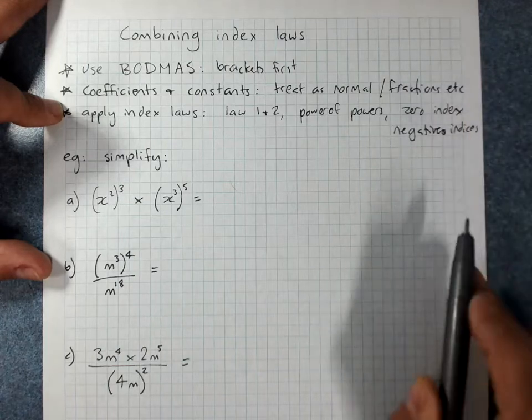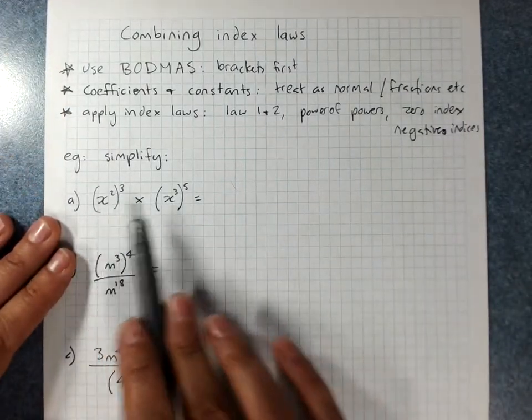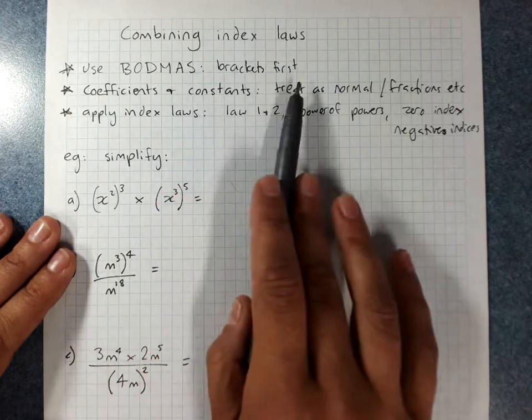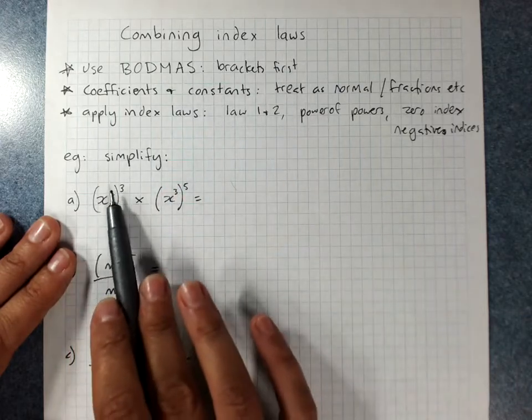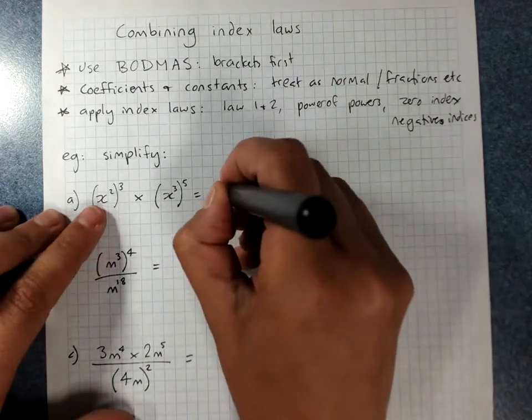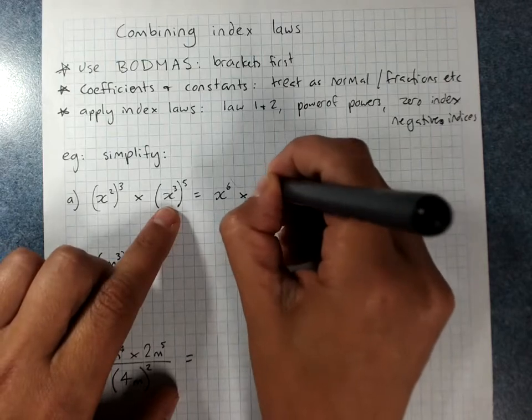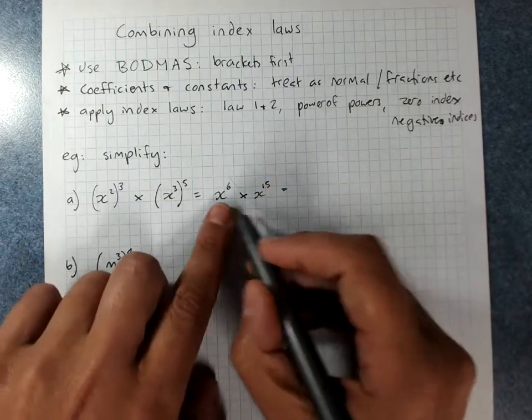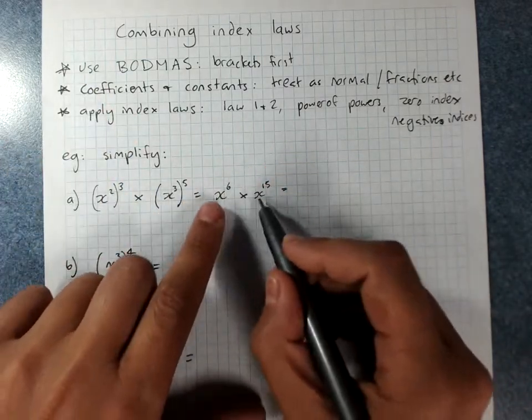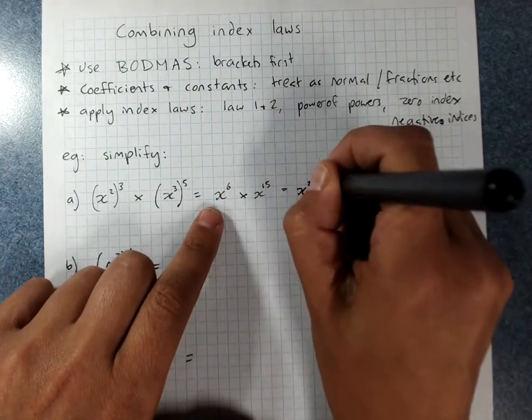We'll revise negative indices next lesson. So to simplify this, I've got powers of powers, brackets first, I expand those. Remember, power outside a bracket, we multiply. So I've got x to the 6 times x to the 15. Then I've got index law 1. Multiplying powers of the same base, I add the powers, I've got x to the power of 21.